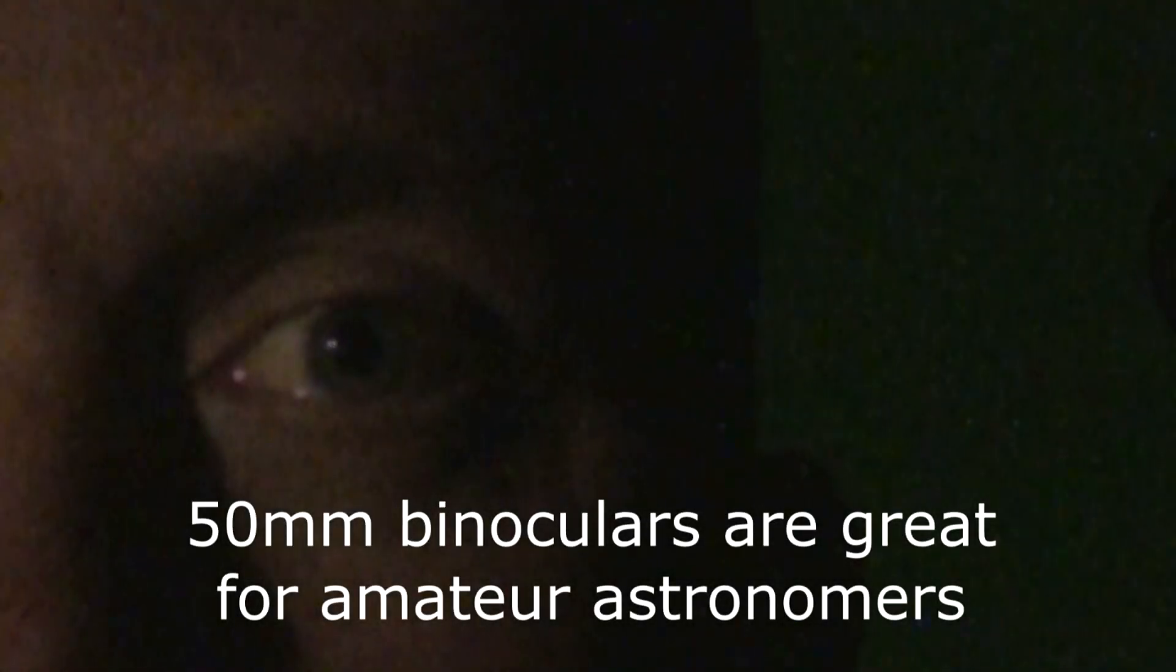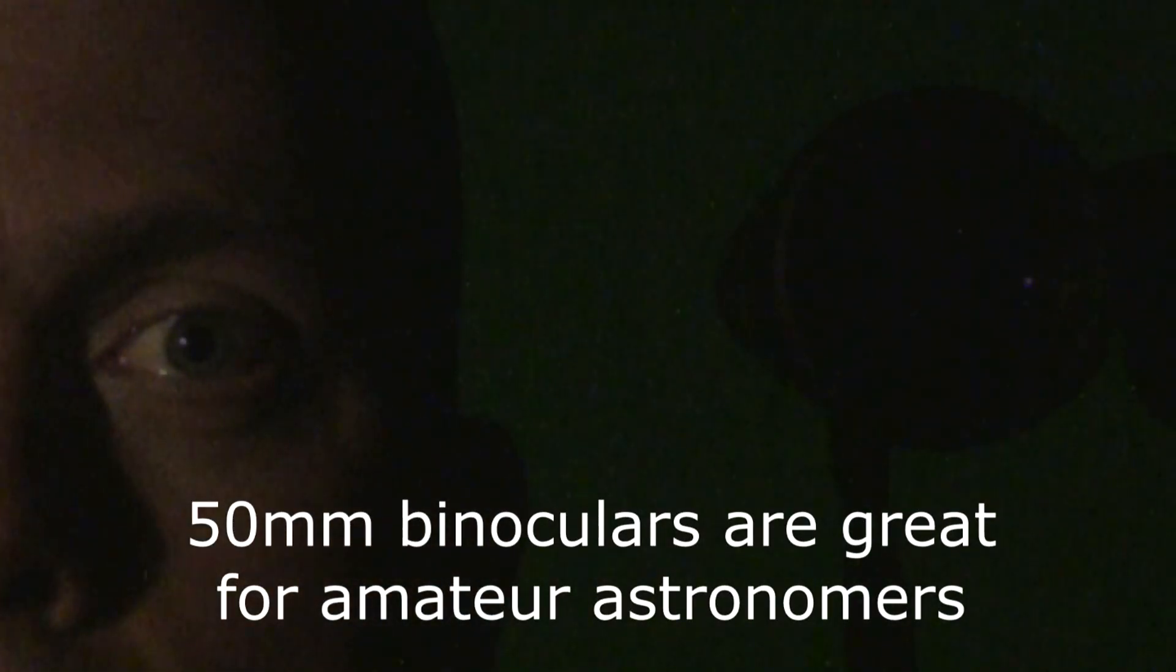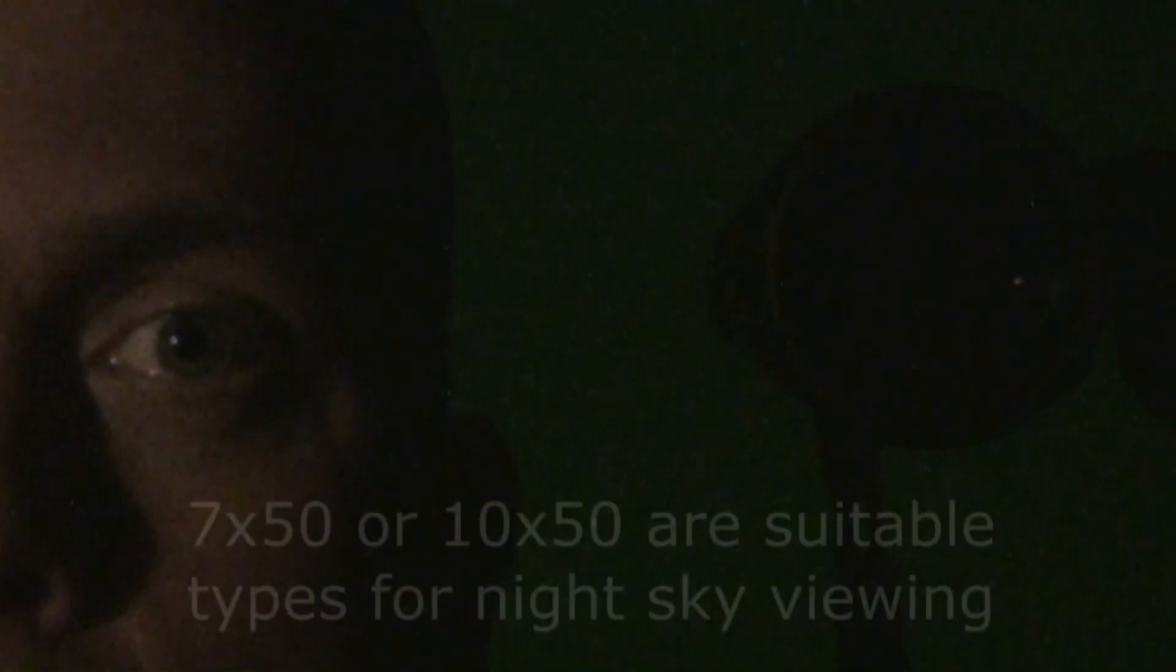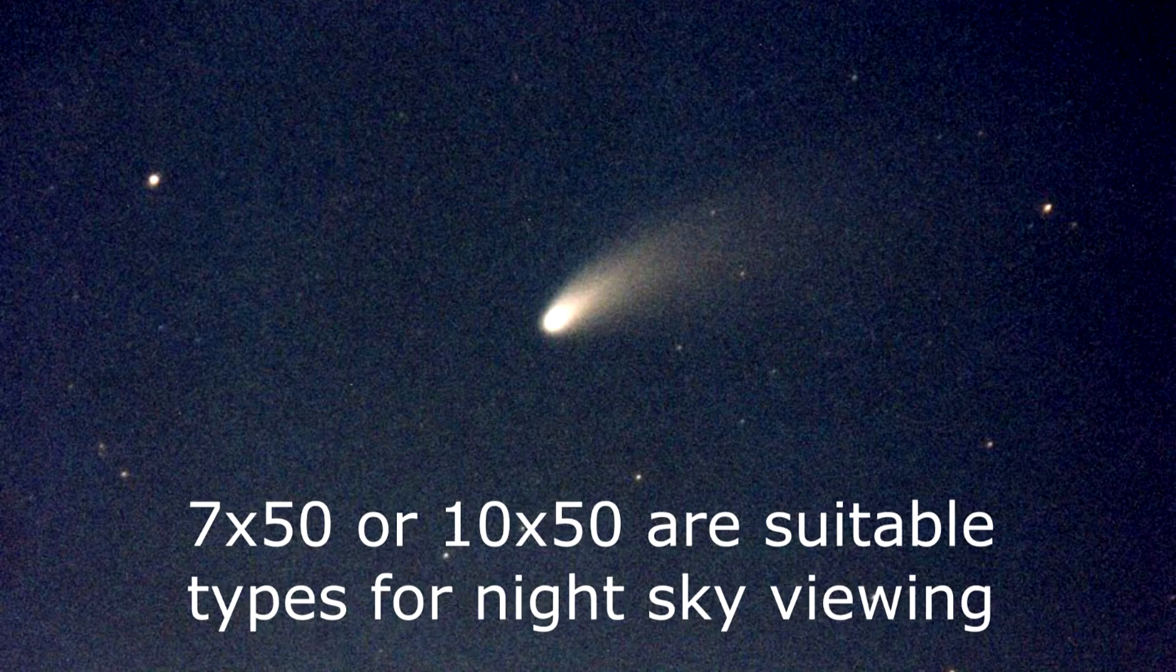And now an observing tip. 50 millimeter aperture binoculars have more than 50 times the area of the fully dilated human pupil, allowing us to see 2 to 4 magnitudes fainter with them than no optical aid. Their 5 to 7 degree fields of view make them well suited to viewing comets, large star clusters, and sweeping the Milky Way.